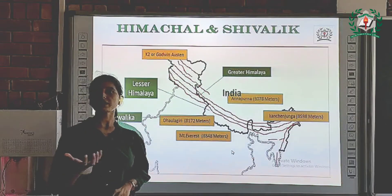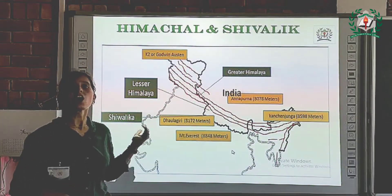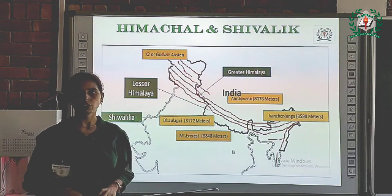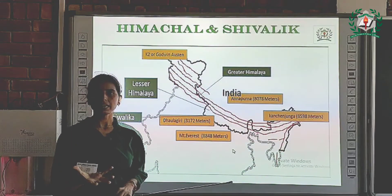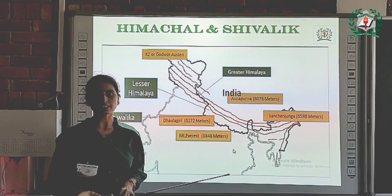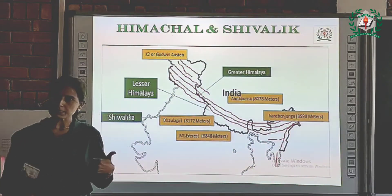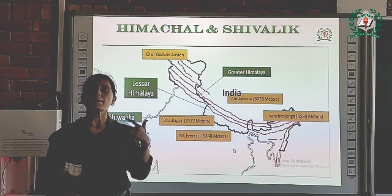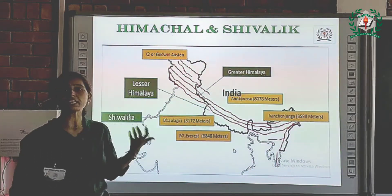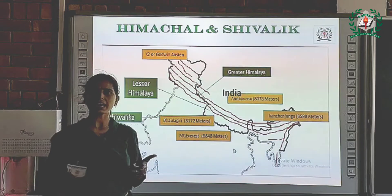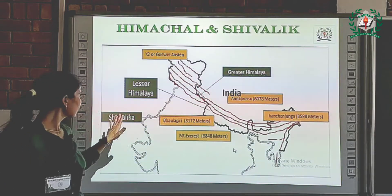The Shivalik range is very important for us because it is home to many animals and it also provides many medicines for us. Here we can also see many trees like deodar, pine, and oak. These trees are found in this range.